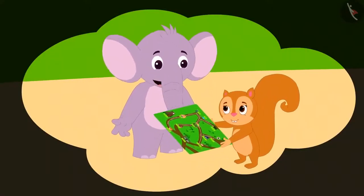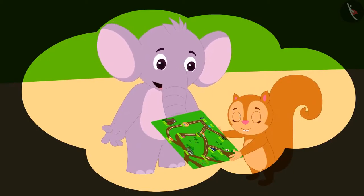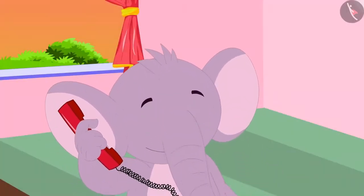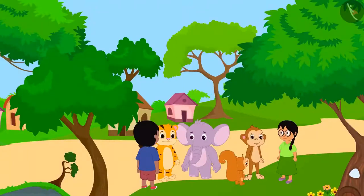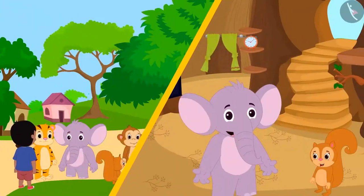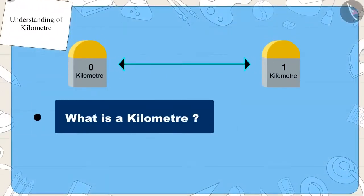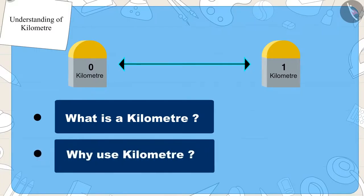Chanda asked Appu to tell her more about kilometer when they meet the next day. Appu agreed and then disconnected the call. How was the trip of the villagers the next day, and what else did Appu tell Chanda about kilometer? We will see this in the next video. Today we learned what a kilometer is and why it is used. In the next video, we will learn more about kilometer with some interesting examples.